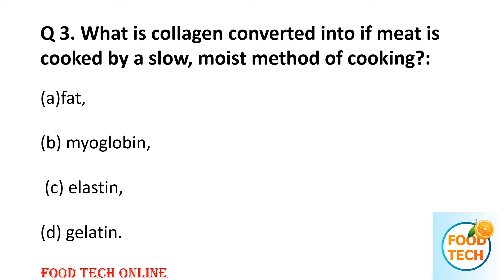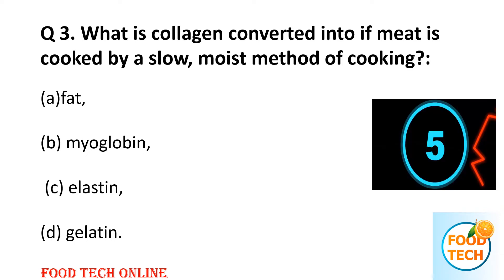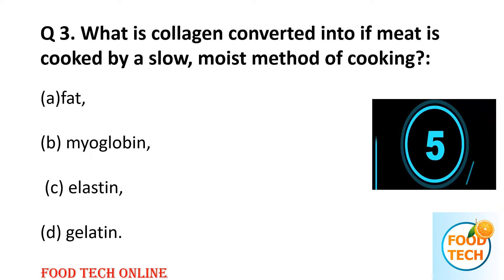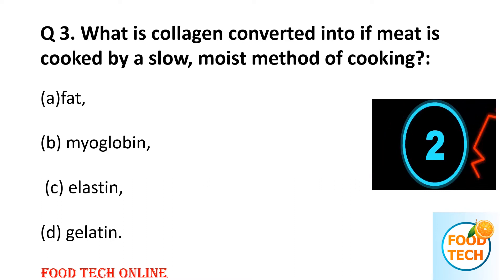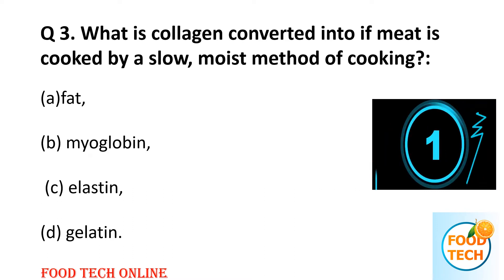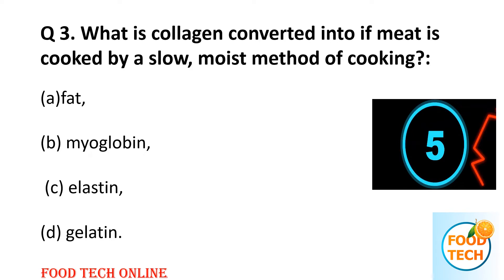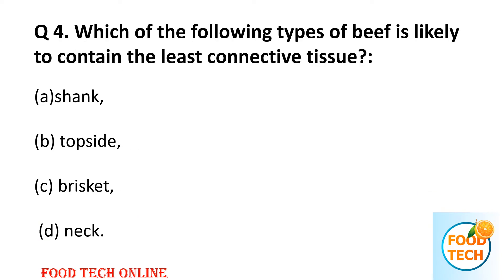Question 3: What does collagen convert into if meat is cooked by a slow moist method of cooking? A: fat, B: myoglobin, C: elastin, D: gelatin. Answer: D, gelatin.